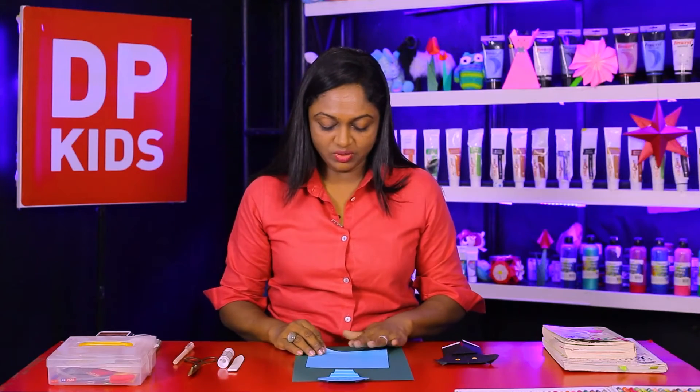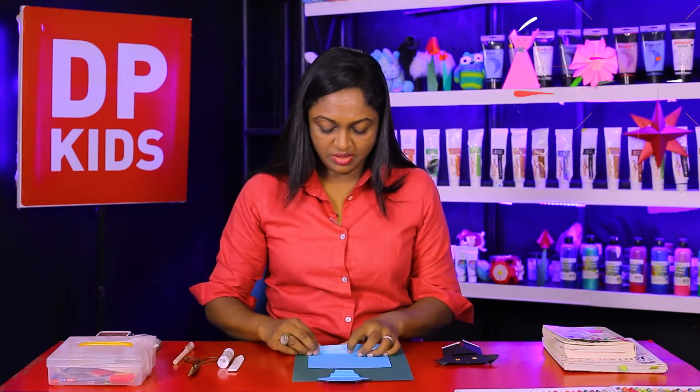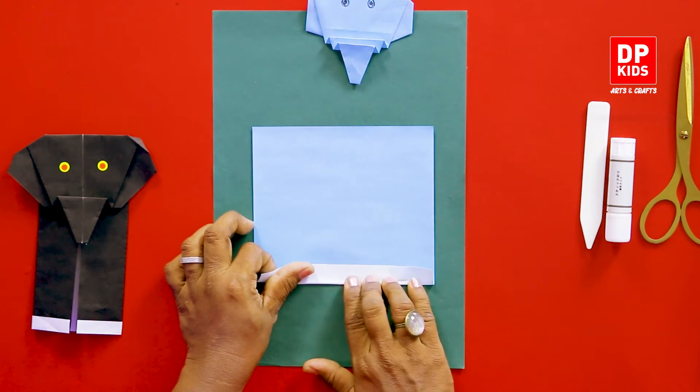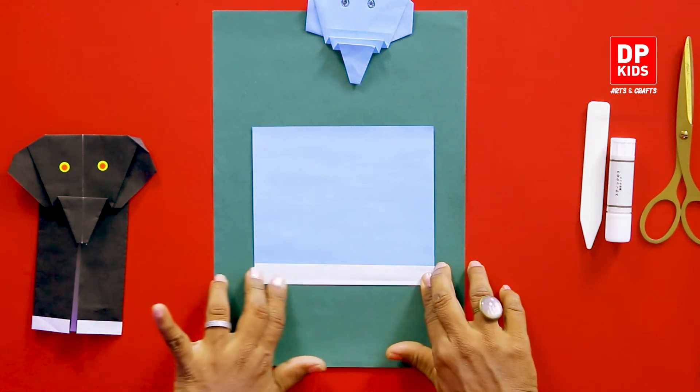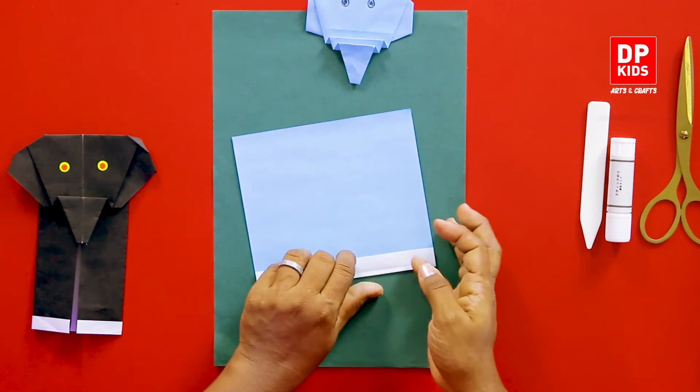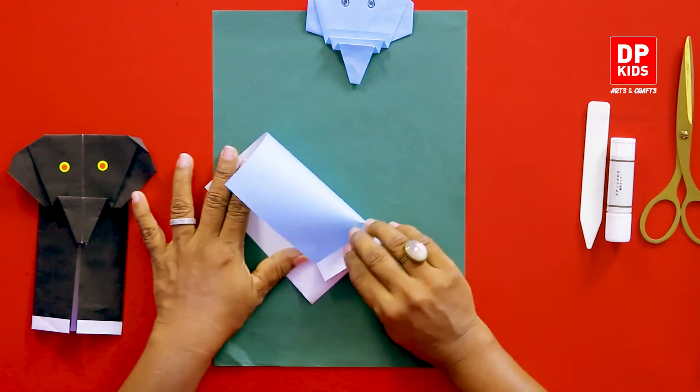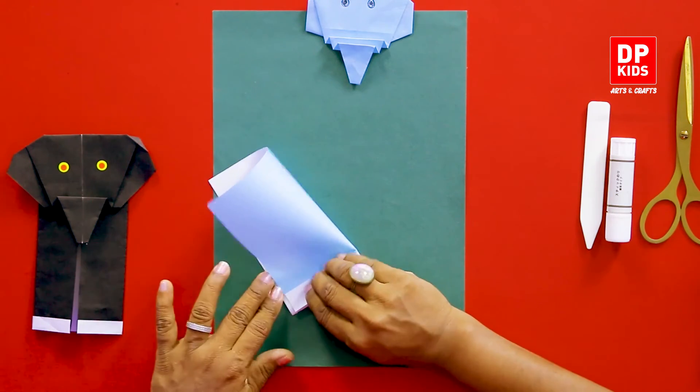Now our elephant's body has to be made. So take the side where you have the colored paper on top. So fold it like this to make the elephant's legs. Now turn it around and fold it in half.